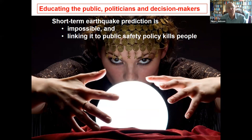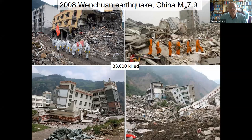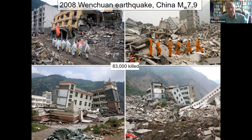Because the public had been allowed to expect that scientists would predict earthquakes, they got really angry when one wasn't predicted. This is one of the most important messages in our partnership: what we cannot do as well as what we can do. You have to educate the public and politicians that short-term earthquake prediction is firstly impossible, and secondly, if you link it to public safety it kills people — because then people don't do what they should to make themselves safer. This was brought home in China in 2008 when the Sichuan earthquake killed 80,000 people.